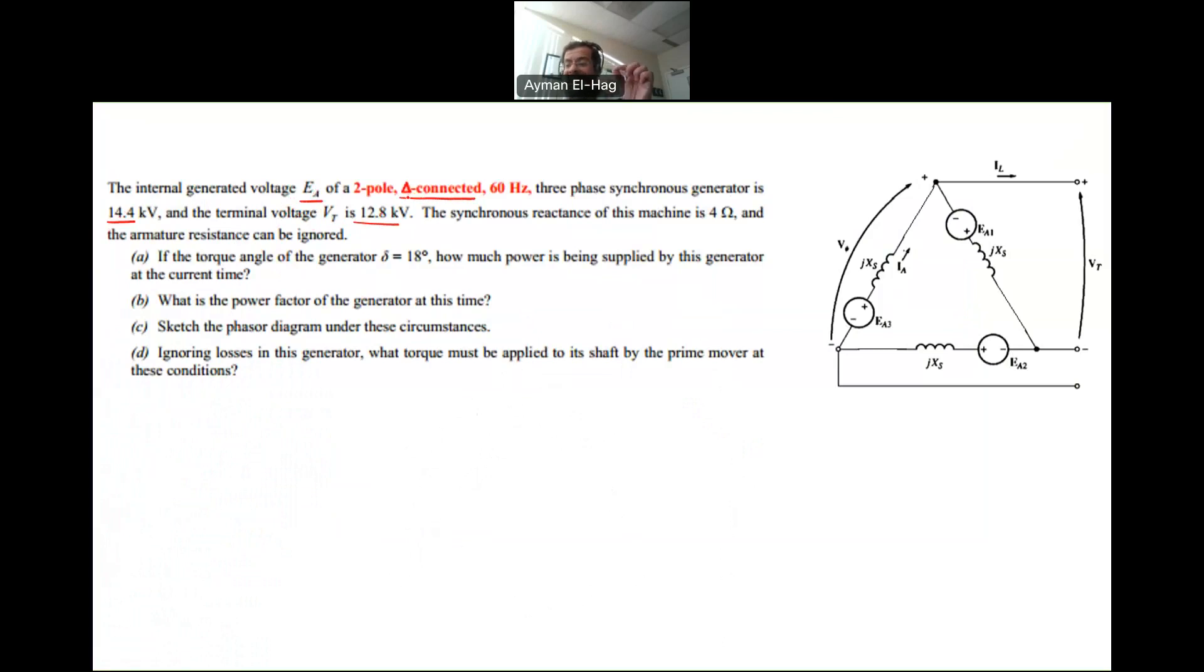Now, since this is a delta connected generator, the phase voltage and the line voltage are the same. As we know, the data given in any question is by default the line-to-line voltage. But because this is a delta connection, the line-to-line and the phase voltages are the same. Then we are given the synchronous reactance Xs as 4 ohm, and we ignore the resistance.